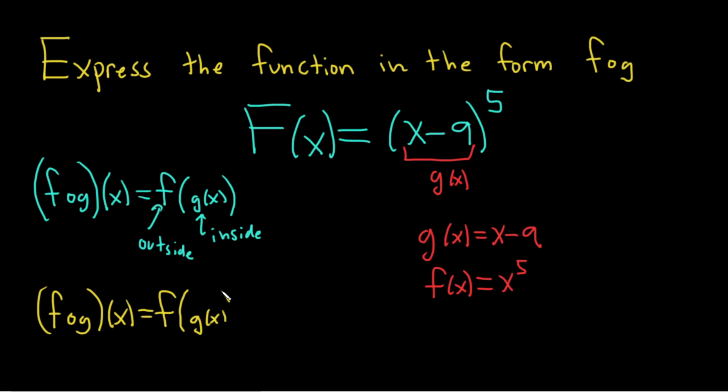And this is the same thing as F of, so then the inside function here is X minus 9, right? That's what we replace it with. And then this says, go to F and replace X with X minus 9.